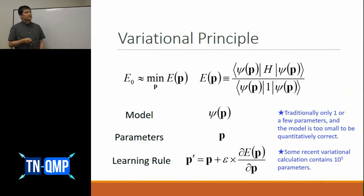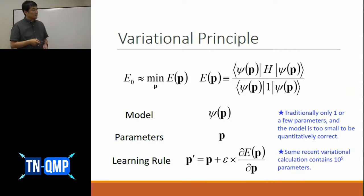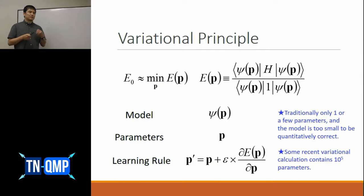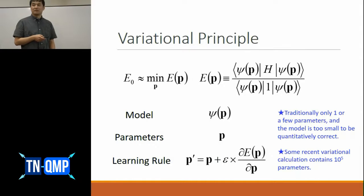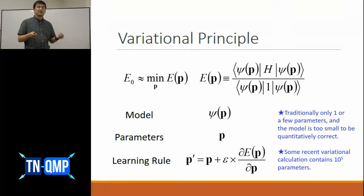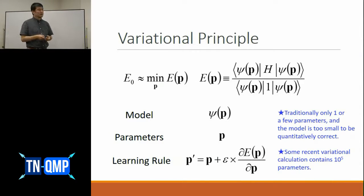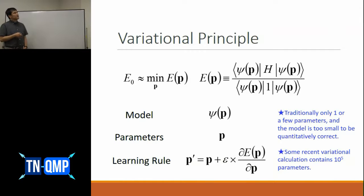On the other hand, there are variational calculations which contain as many as 100,000 parameters, giving pretty accurate results. But in many cases the approximation is not controllable — meaning there is no systematic way to improve the approximation, or no proof that by simply increasing the number of parameters you eventually converge to the exact result. So traditional variational calculations are either too small to be quantitatively correct, or not controllable.